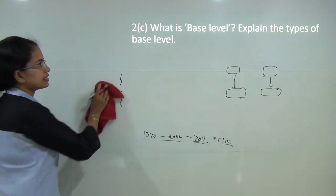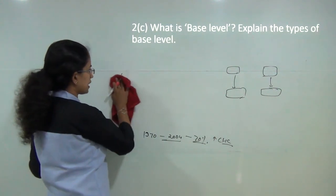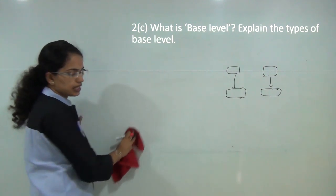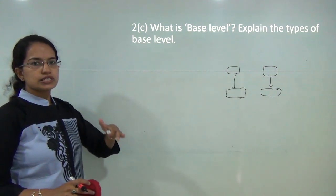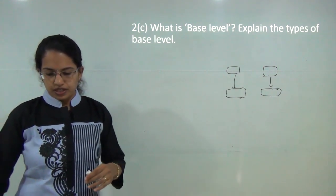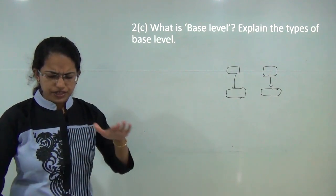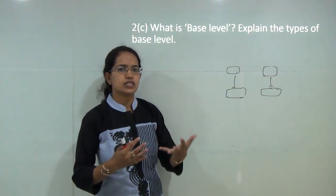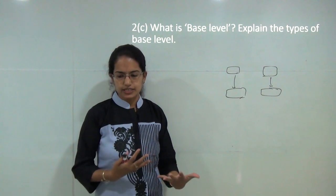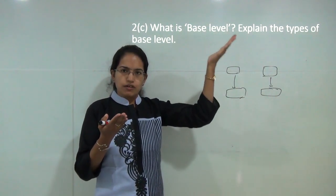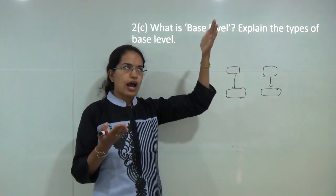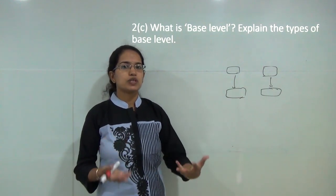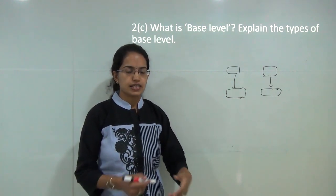The next question is: what is base level, and explain its types. Base level is the lowest level at which the velocity of flowing water becomes minimal. We usually talk about the sea as a base level, referring to terms like below sea level and above sea level.